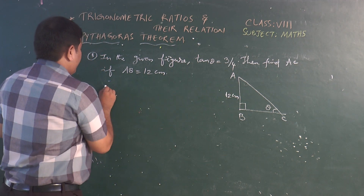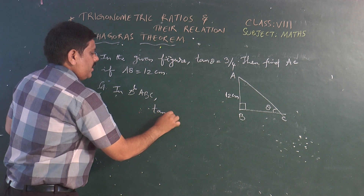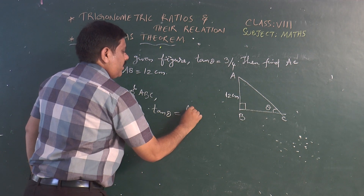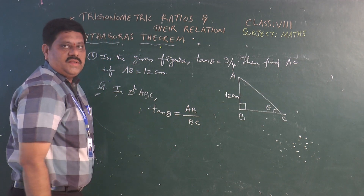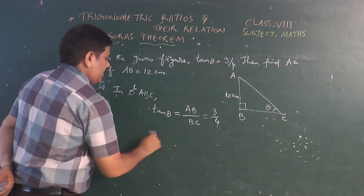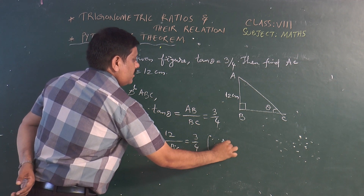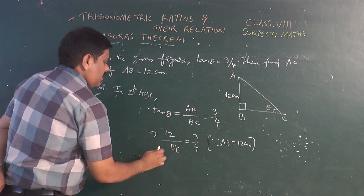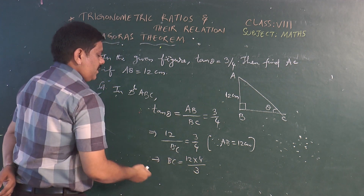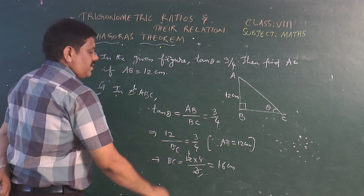In triangle ABC with right angle at B, tan θ equals opposite over adjacent, which is AC / BC = 3/4. Since AB is given as 12 centimeters, we have 12 / BC = 3/4. Solving, BC = 12 times 4/3 = 16 centimeters.